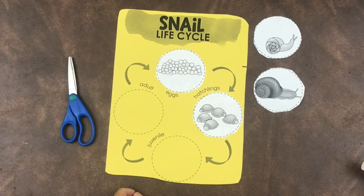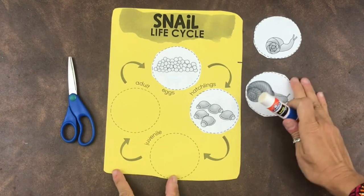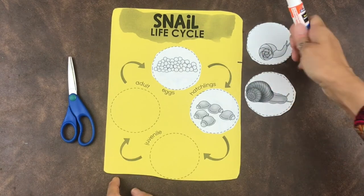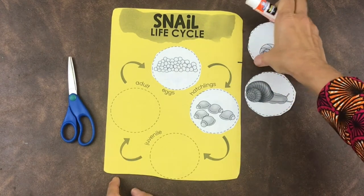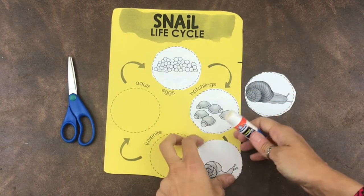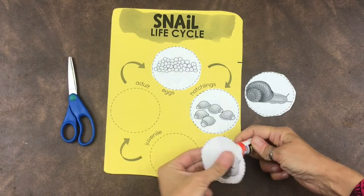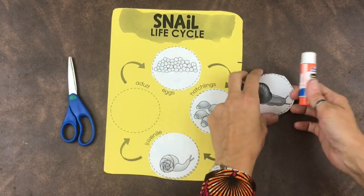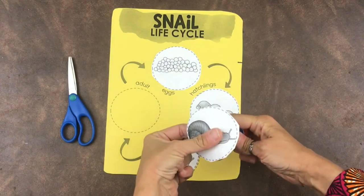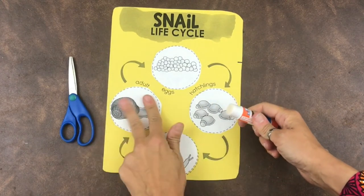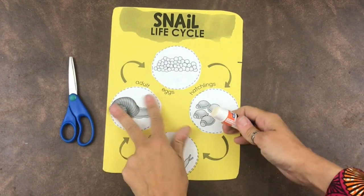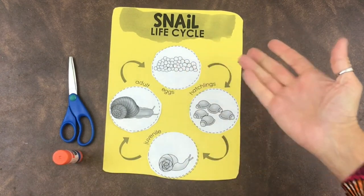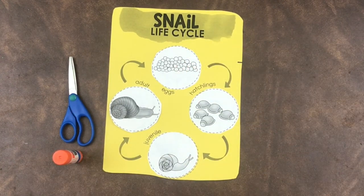Next comes the juvenile. Which one do you think is juvenile? Juvenile means young, so that looks like the smaller snail. And then the adult snail. Voila — there you have your snail life cycle.